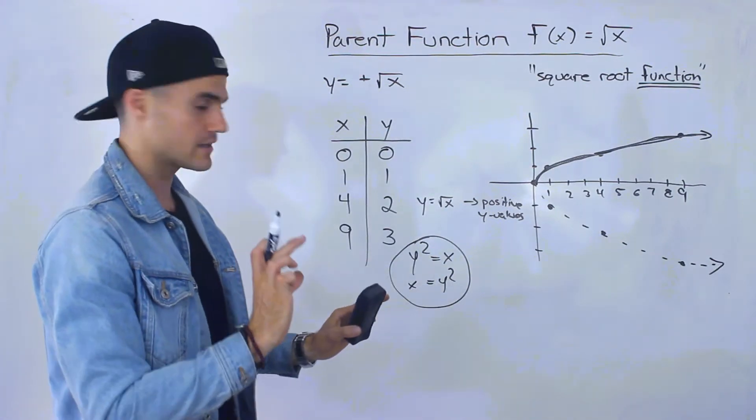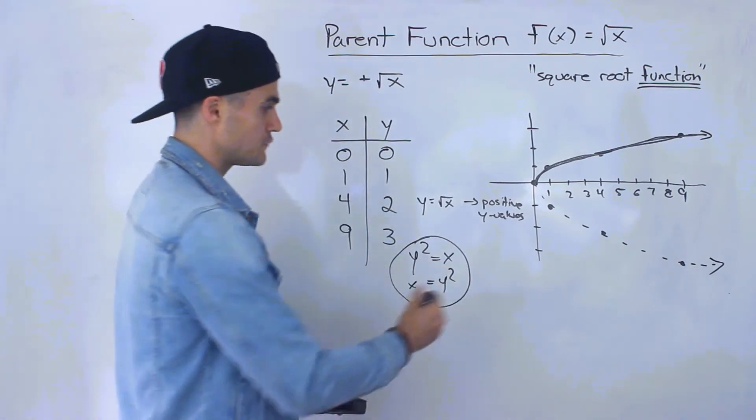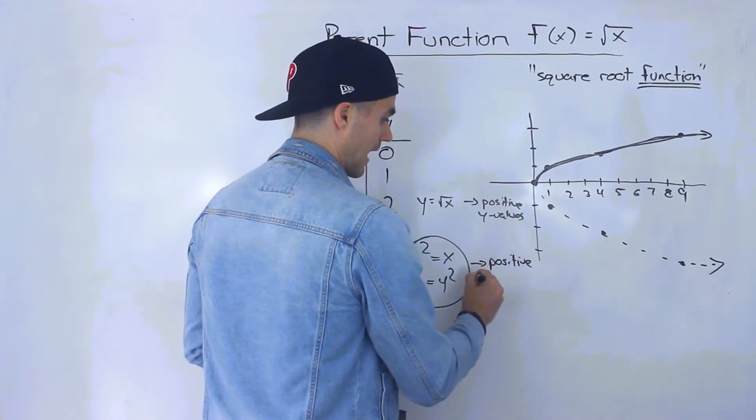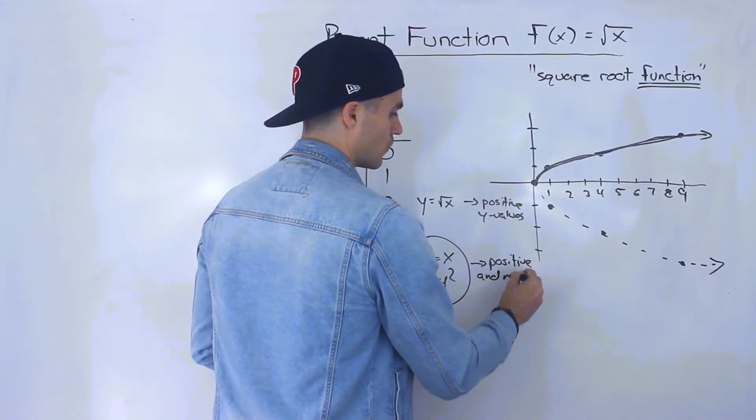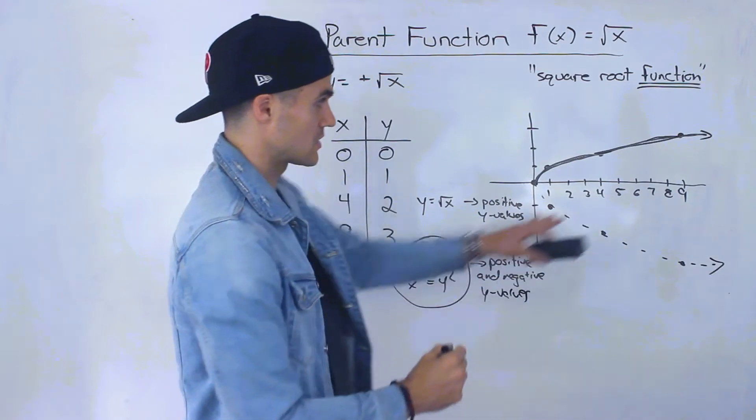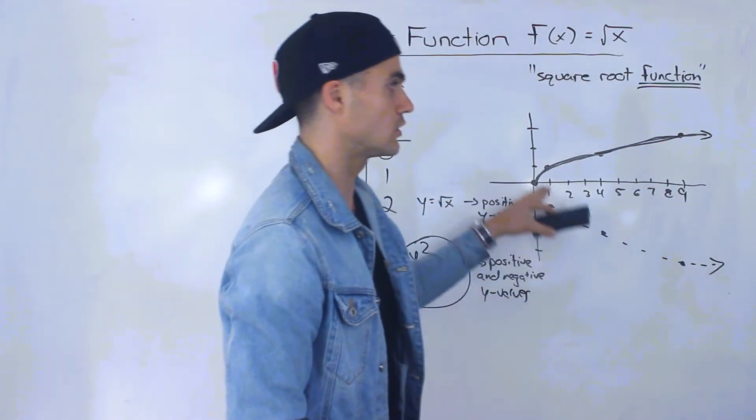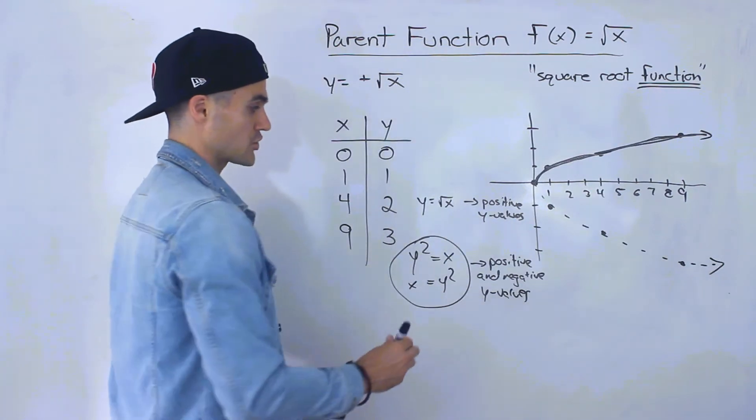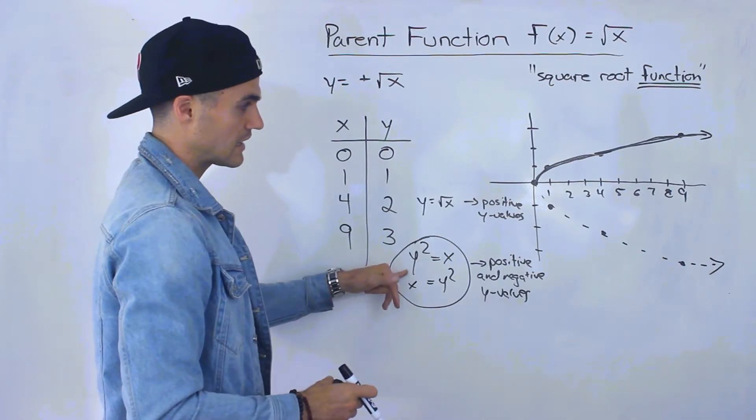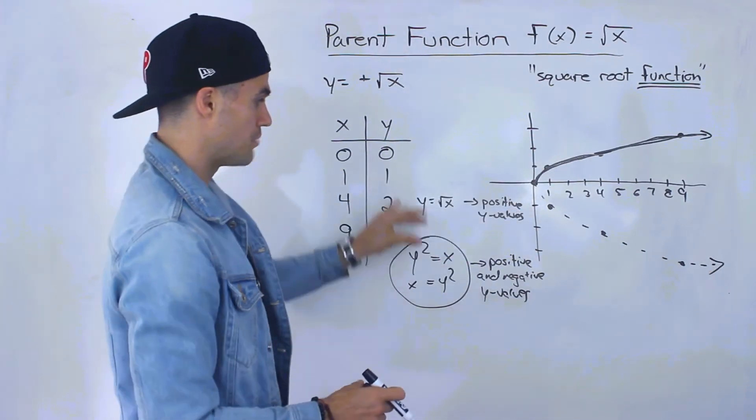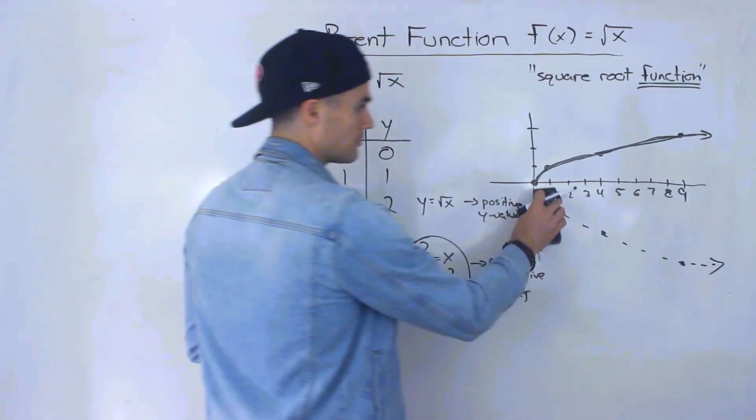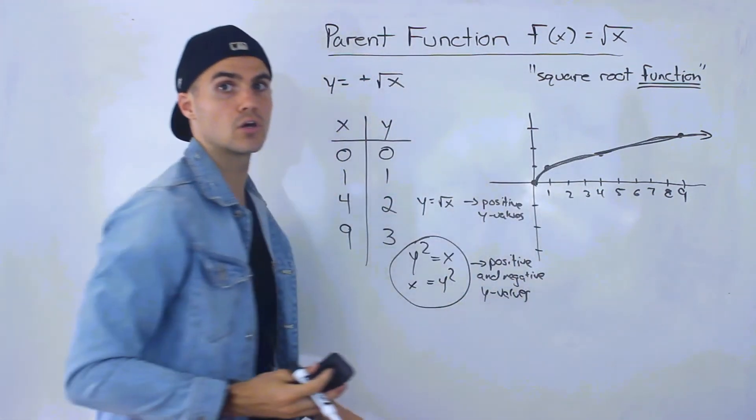If you see something like this, then you would deal with the positive and negative y values. And so the graph of this would have both of these parts, it would look like that. And it wouldn't be a function, it would just be a relation because it would fail that vertical line test. So if you see something like this, you put both positives and negatives. But if you see something just like this, then we're dealing with the square root function, you would only put the positive y values and it would look like that.